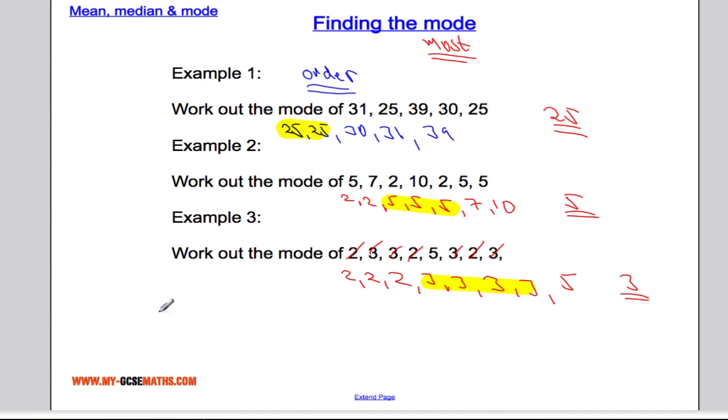Just something else to bear in mind. If you had a data set like this, say 1, 2, 3, 4, we've got 4 data points. There's no mode there. Nothing is the most common. So we would just say no mode.